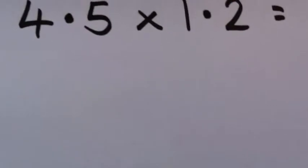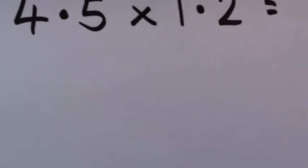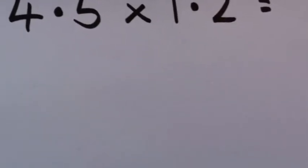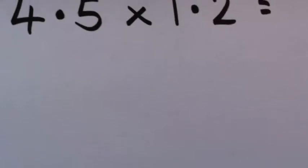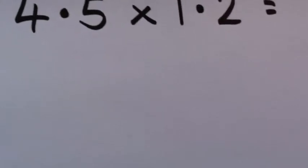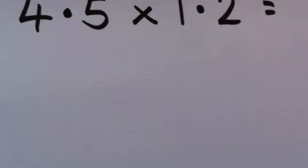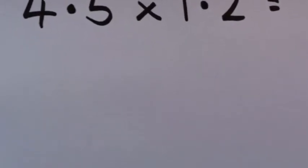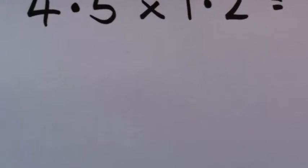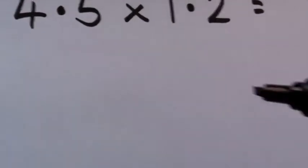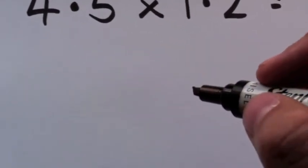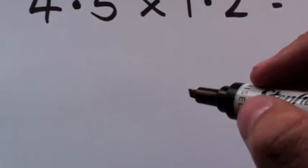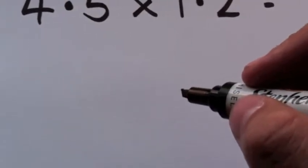Welcome again to Maths Made Easy NZ. Today we're looking at multiplying two-digit decimal numbers, which can be quite confusing for some people, but it's not actually that hard if you know how to multiply two-digit numbers. You've probably seen in a previous video that these numbers look familiar, and that's because they are.